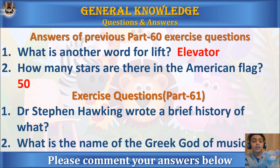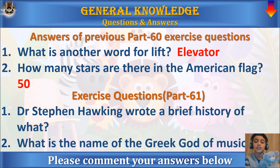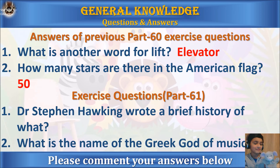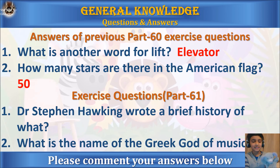Now here are the exercise questions for part 61. Question one: Dr. Stephen Hawking wrote a brief history of what? Question two: what is the name of the Greek God of music? Please find and comment your answers below. Looks easy, but I will search for the answer and comment below — definitely!